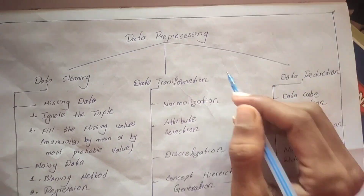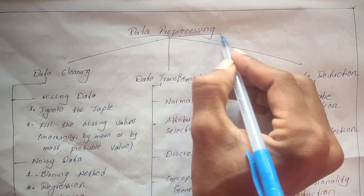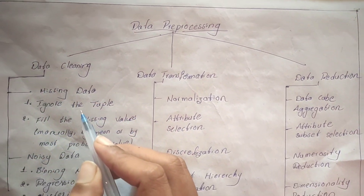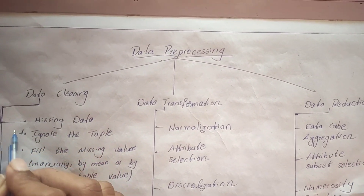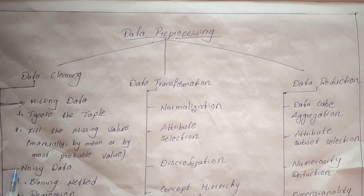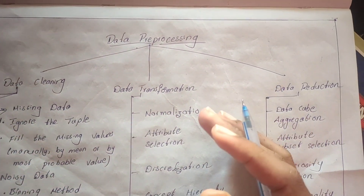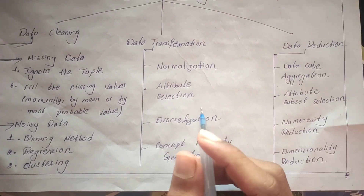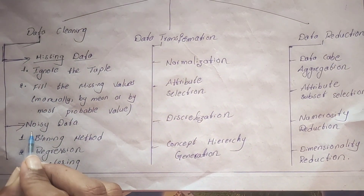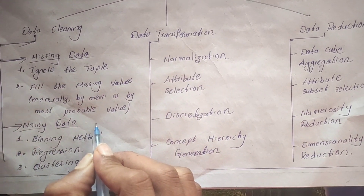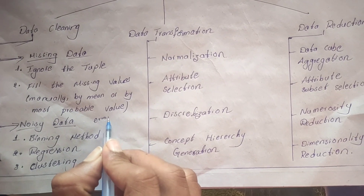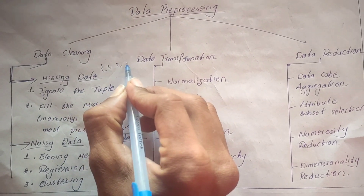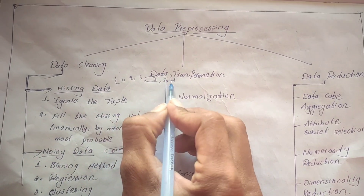Now let's discuss the structure of data preprocessing. First is data cleaning. In data cleaning there are two types: missing data and noisy data. Missing data means some values are missing in the dataset. Noisy data means any error data or irrelevant data found in the dataset.